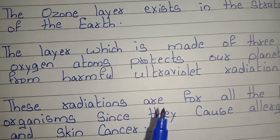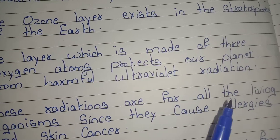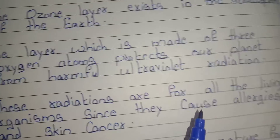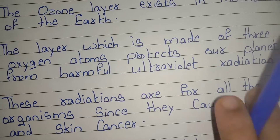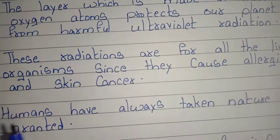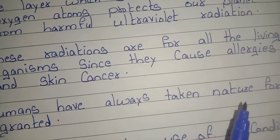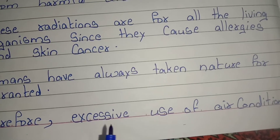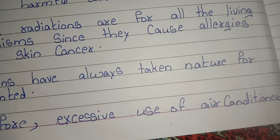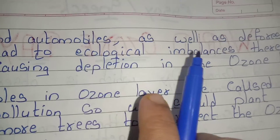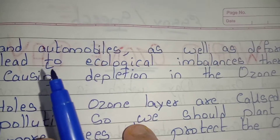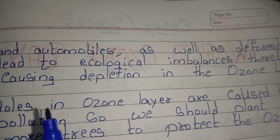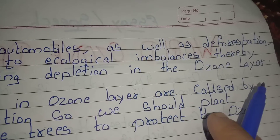These radiations are harmful to all living organisms since they cause allergies and skin cancer. Humans have always taken nature for granted. Therefore, excessive use of air conditioners and automobiles, as well as deforestation, lead to ecological imbalances, thereby causing depletion in the ozone layer.